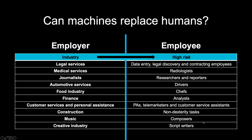In music, composers are at high risk — we already have music written by artificial intelligence agents. I'm not saying this music is as good as music written by a human, but some companies may prefer it for cost reasons, choosing algorithmic background music for websites rather than hiring a human composer. In creative industries, scriptwriters are at risk — we currently have artificial intelligence writing scripts. So all these occupations are in high-risk categories.